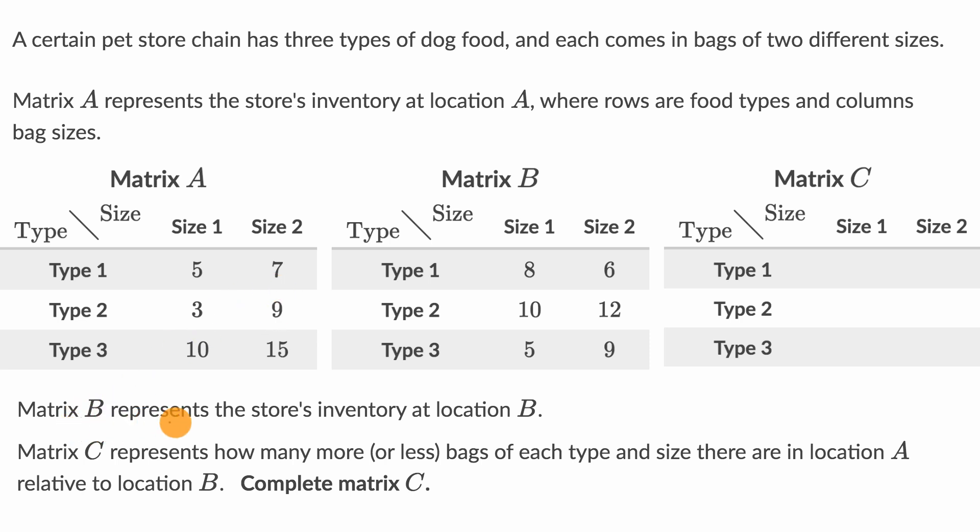Matrix B represents the store's inventory at location B. Same thing for store B. Matrix C represents how many more or less bags of each type and size there are in location A, relative to location B, complete matrix C.